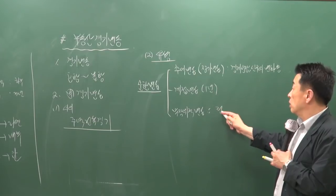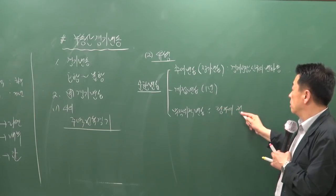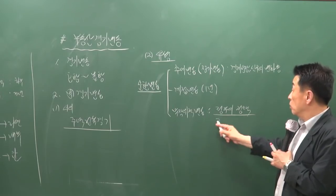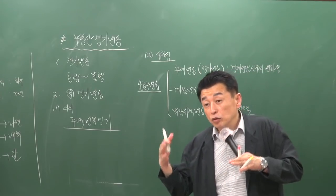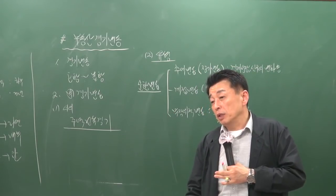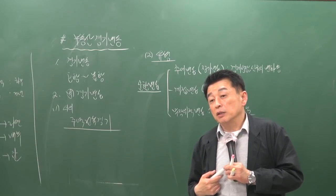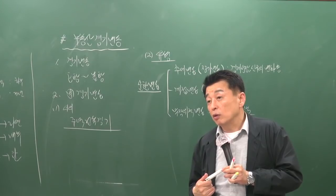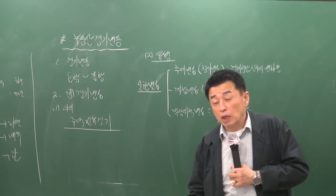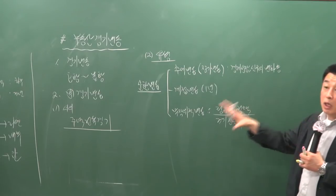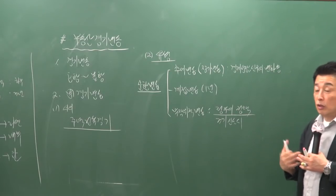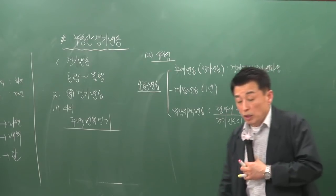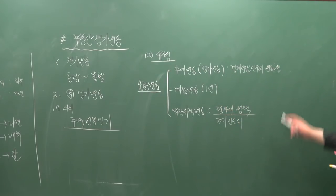부동산 쪽에서는 주로 무작위적 변동으로 나타나요. 예를 들어 정부가 3기 신도시를 공급하겠다고 발표하면 해당 지역은 들썩거리지만, 1기·2기 신도시 지역은 집값이 떨어지는 상황이 생겨요. 정부 정책 하나로 특정 지역 경기가 살아나는 반면 다른 지역은 위축될 수 있는, 전혀 예측할 수 없는 상황이죠.